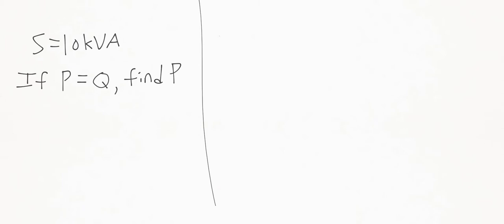Hey guys, welcome back to Engineering Education. In the last video we solved a problem where we're given the apparent power of an arbitrary three-phase circuit equal to 10 kVA, and we're told that the true power is equal to the reactive power. We wanted to find the true power of the circuit. The way we solved it was using the power factor relationship: power factor equals cosine theta equals true power over apparent power, and sine of theta equals reactive power divided by apparent power. We solved for theta, put those two expressions together, substituted P for Q, and solved for P.